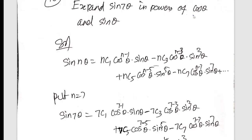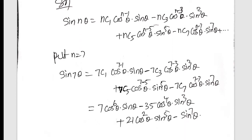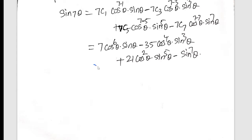Next: expand sin(7θ) in powers of cos and sin. Very easy. Sin(7θ), n-theta — you know that formula. N is 7. Up to nC. N equals 7: you know that nC1, nC1, nC3. It's very easy. Only cos, only sin. In terms of sin and cos, just apply. And the nC1, cos power sin is 6.